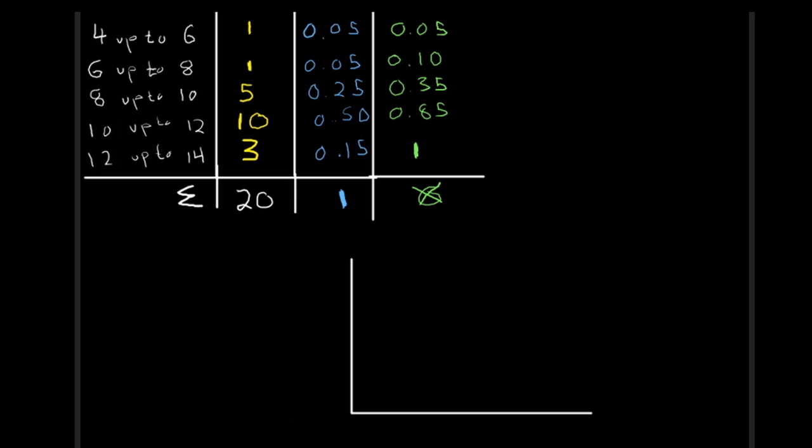And what we would do is this would be our cumulative relative frequency, 100% cutting in in half. We would have 0.5, 0.25, 0.75, and then 0.125, 0.375, 0.675, 0.825, and up and up and up.